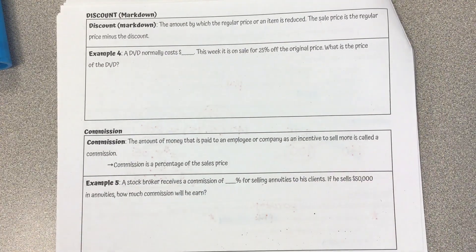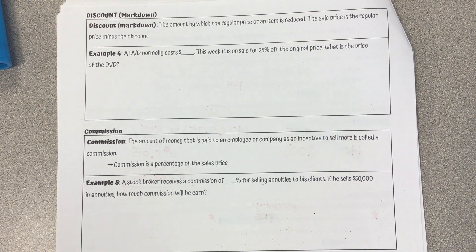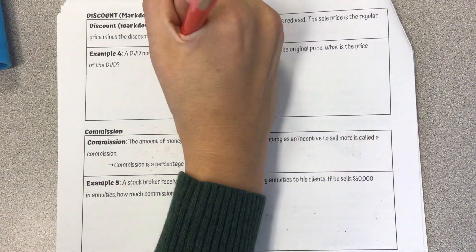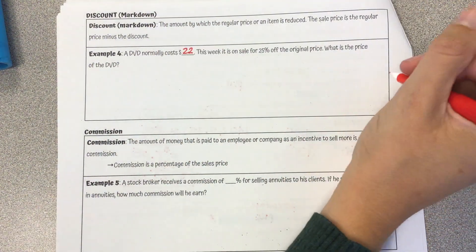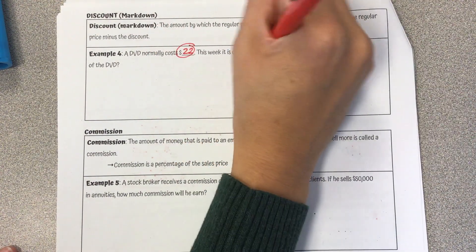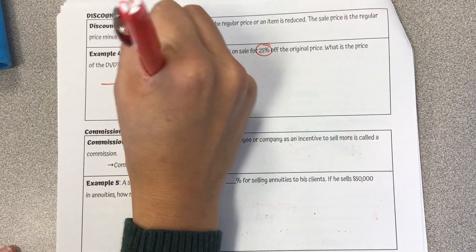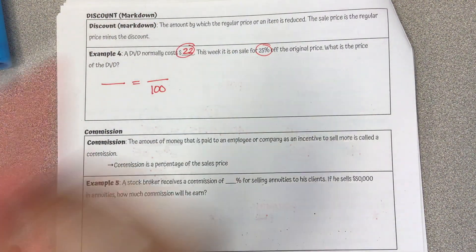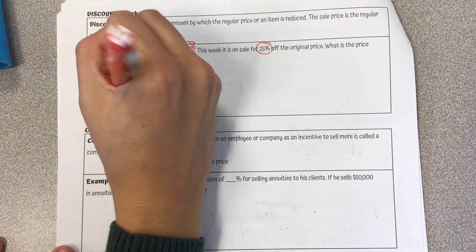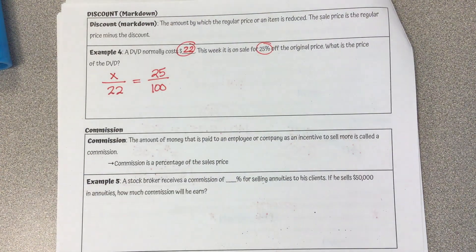Discount — also called markdown, same thing. A discount is the amount by which the regular price of an item is reduced. The sale price is the regular price minus the discount. A DVD normally costs $22. This week it is on sale for 25% off the original price. What is the price of the DVD? Setting up my blank proportion: the 25% is what we're looking at, and $22 is the original price. We're trying to figure out what is 25% of that $22.